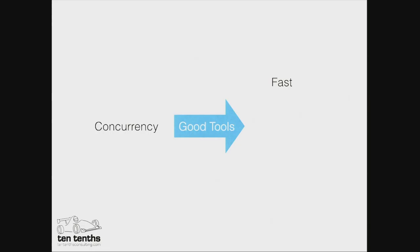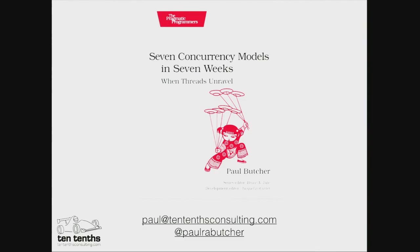I said earlier on that concurrency is hard. Actually, that's not true. Threads and locks are hard. Concurrency isn't. If we have the right tools, concurrent programs can be fast, scalable, resilient, and most importantly simple — and correct. But it's all about choosing the right tools. And with that, any questions?